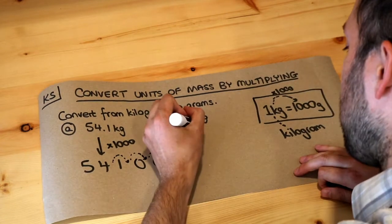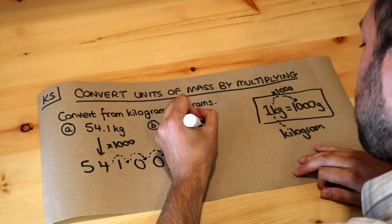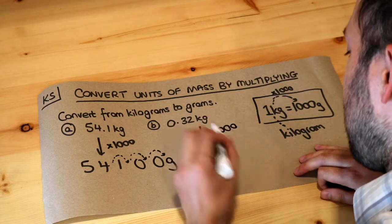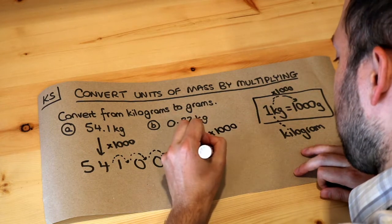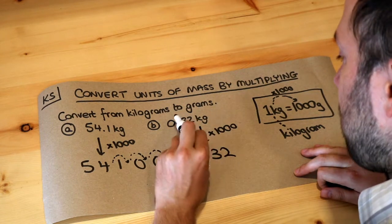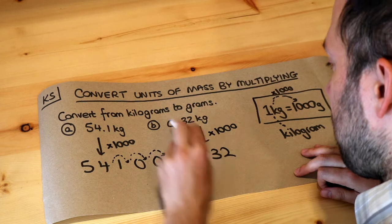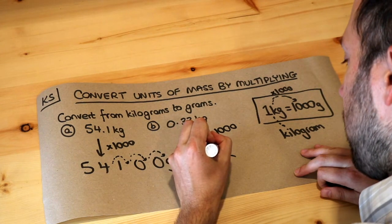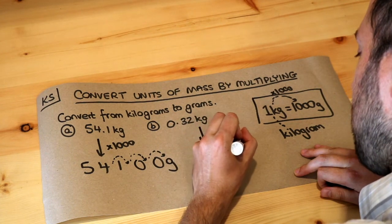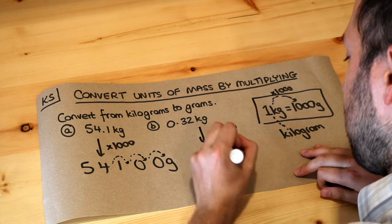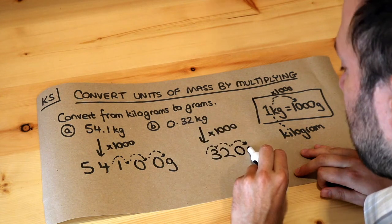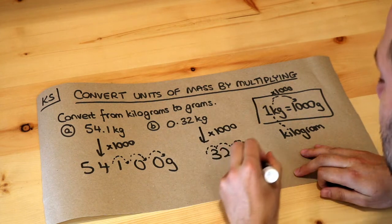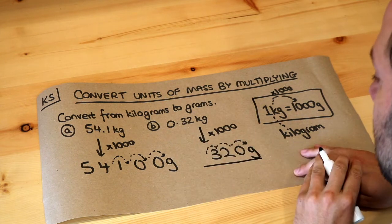What about the second problem? We're going from kilograms to grams, so we just need to multiply by a thousand. We put the digits 3 and 2, with the decimal point currently before the 3. Moving it one, two, three places to the right, we put a zero in and the decimal point is now here. So the answer is 320 grams.